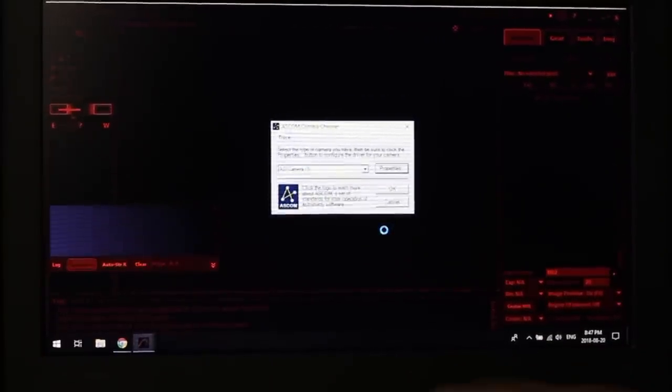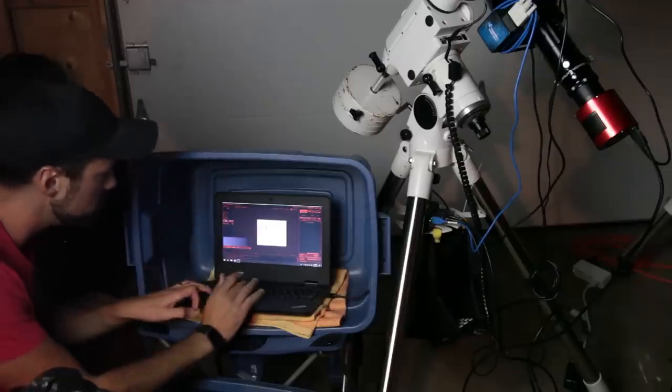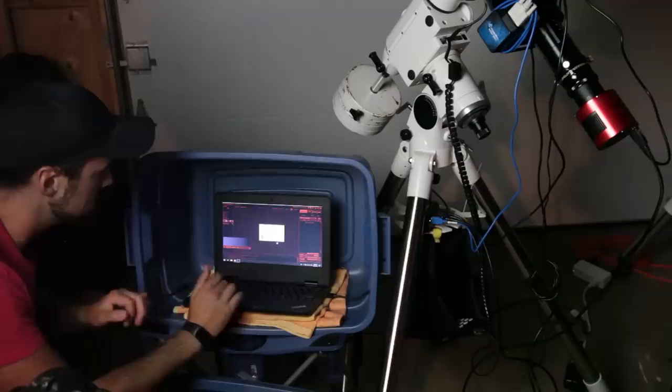So yeah, camera's connected. The Bayer pattern is shown there, RGGB, which is important. So the gain for unity gain is at 120. And I'm going to say OK.